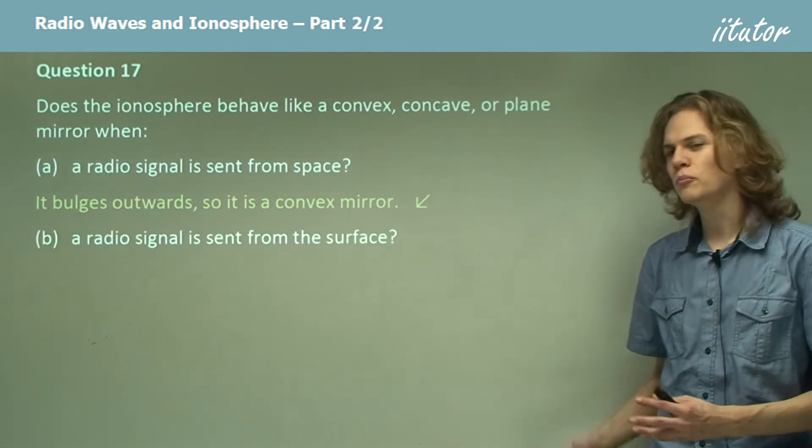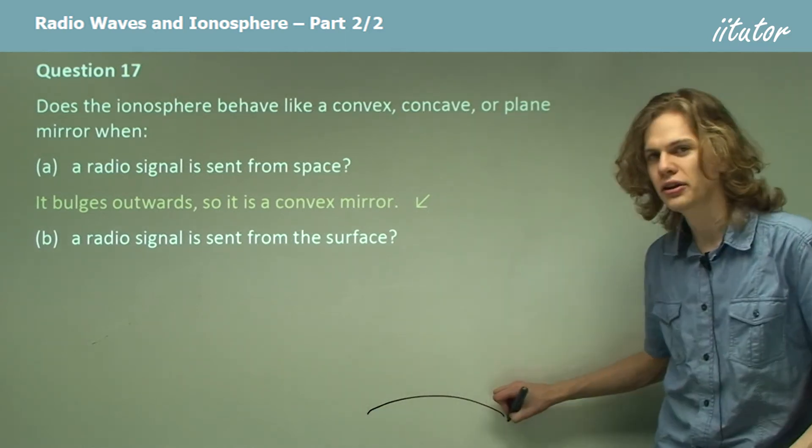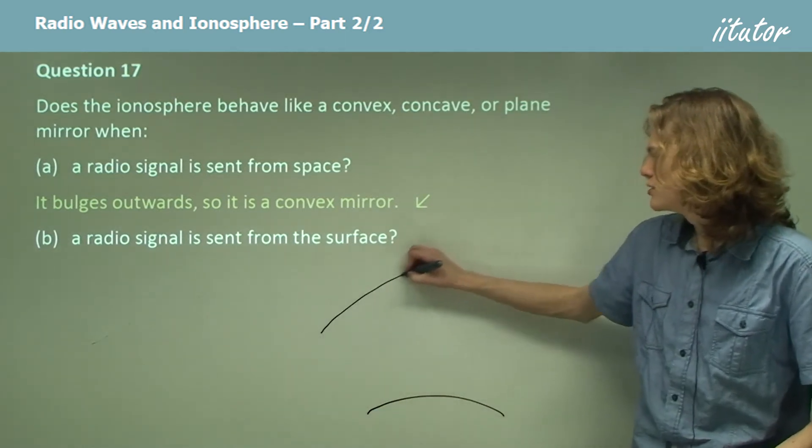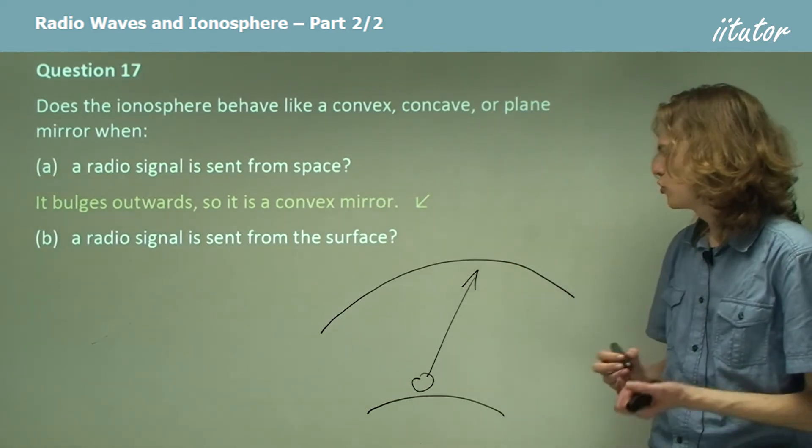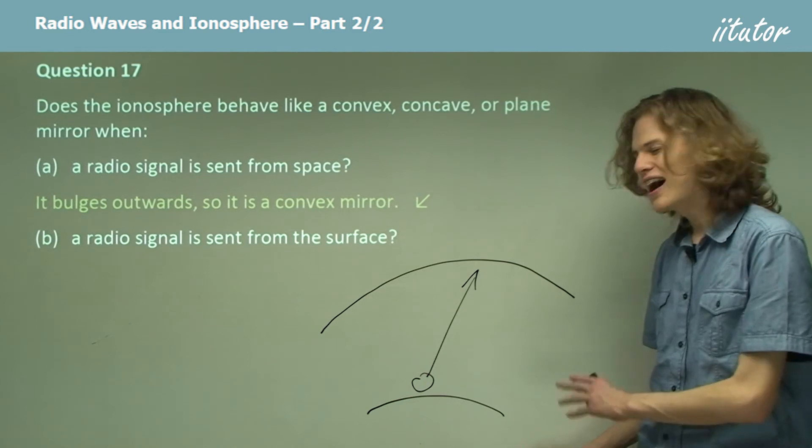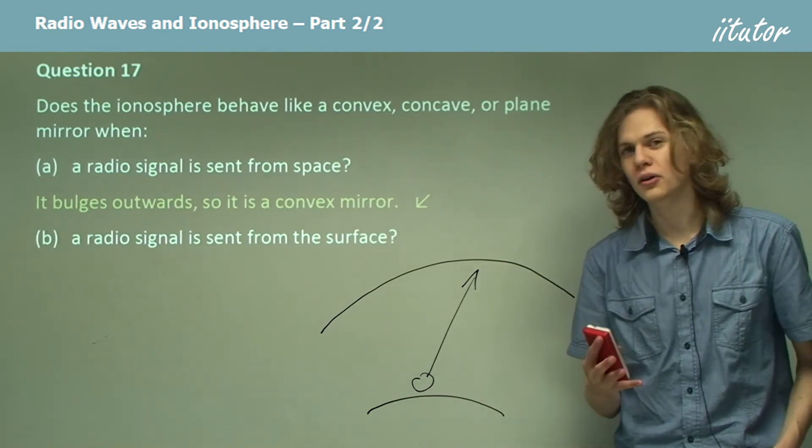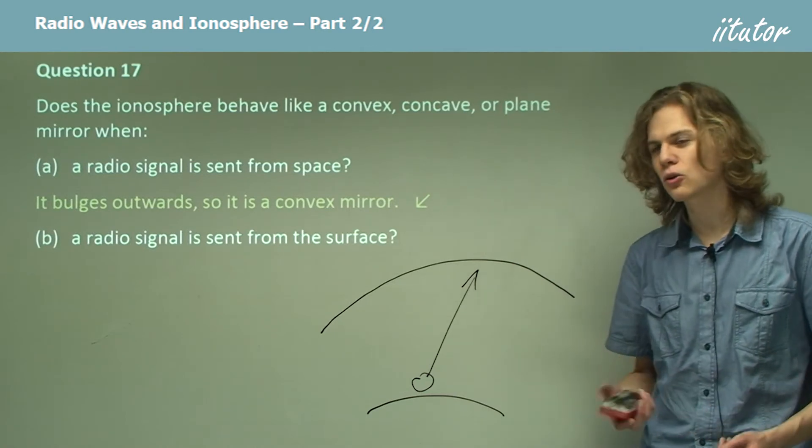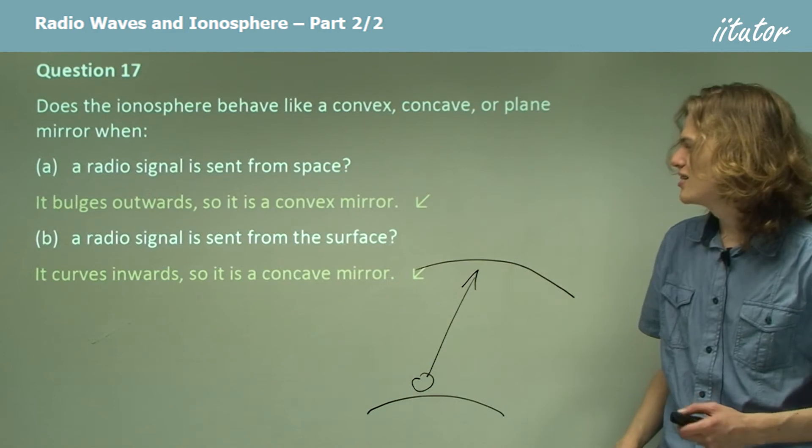How about if we're sending it from the surface? Now in this case, we're on the Earth down here, and the ionosphere is a layer around the Earth like this. It doesn't quite look the same. It is no longer a convex mirror, because we're looking at it from a different angle. Instead, that's right, it's a concave mirror.